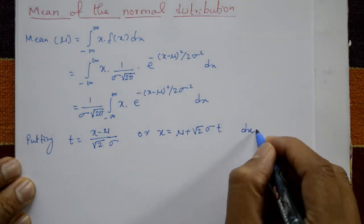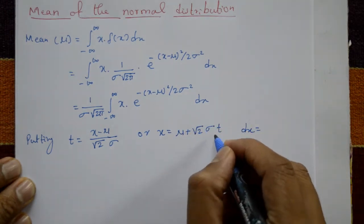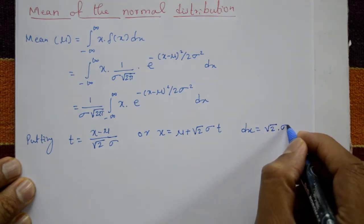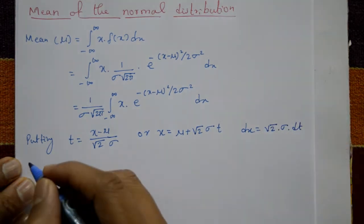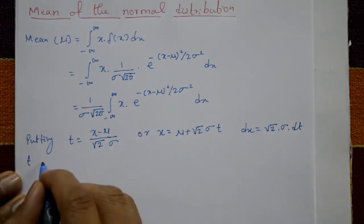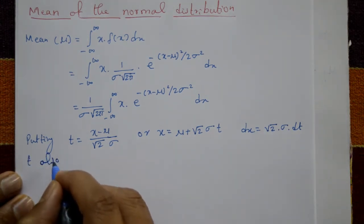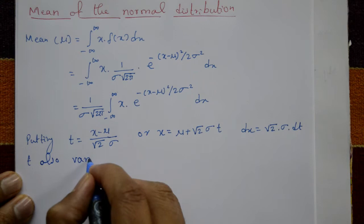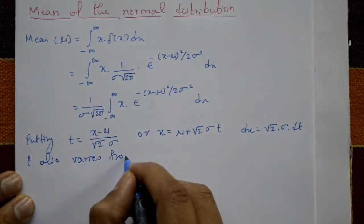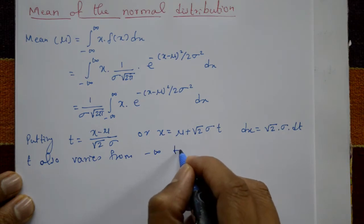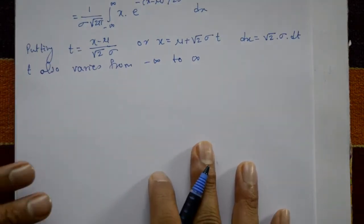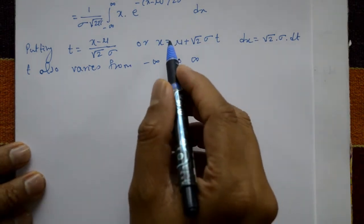Differentiating, dx equals root 2 times sigma times dt. The limits of integration do not change — as x varies from minus infinity to plus infinity, t also varies from minus infinity to plus infinity.